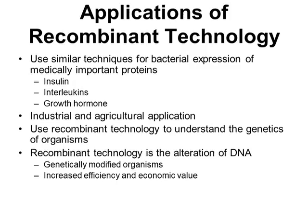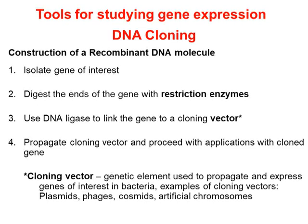وأيضاً لصنع ما يُعرف بالكائنات المعدلة وراثياً أو الـ GMOs. كثير من الناس لا يفهمون الـ GMOs ويعتبرون أي شيء GMO سيئاً، لكن الأنسولين يُنتج الآن في GMO باستخدام بكتيريا مختلفة وخميرة مختلفة، وكذلك الـ growth hormone والـ interleukins — كلها GMOs. نستخدم الـ GMOs لزيادة كفاءة وقيمة اقتصادية كثير من المحاصيل التي نعتمد عليها.